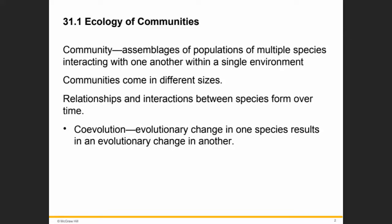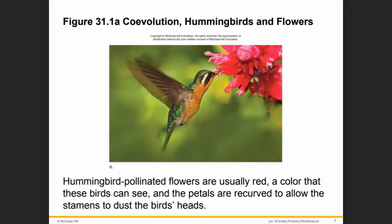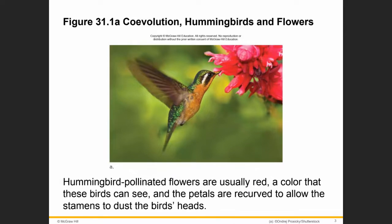The relationships between those pieces and interactions form over time. One type of interaction is co-evolution, which is an evolutionary change in one species that results in an evolutionary change in the other species. The best example I can talk about here is the hummingbird and the flower. The flower doesn't provide nectar out of kindness.